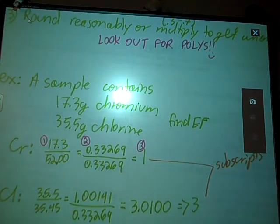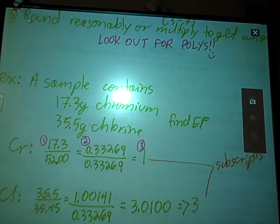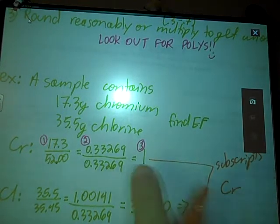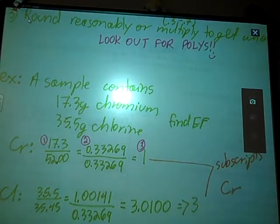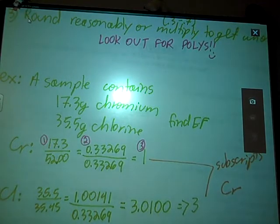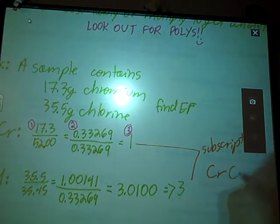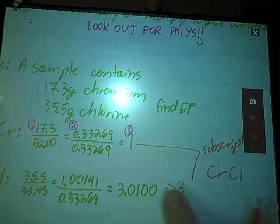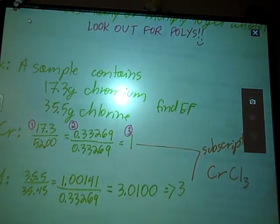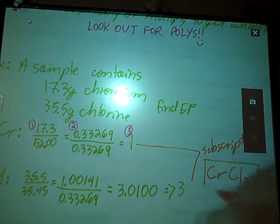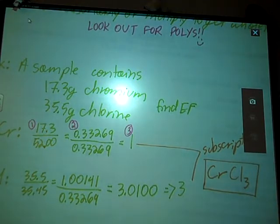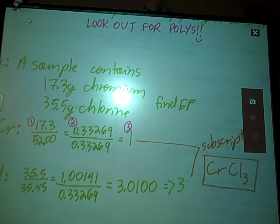So when I come up with my compound, I'm going to write Cr with a subscript of 1, which I don't really need to write. Cl for my second compound with a subscript of 3. So my empirical formula for a compound containing 17.3 grams chromium and 35.5 grams chlorine is, in fact, CrCl3.